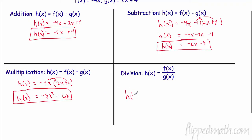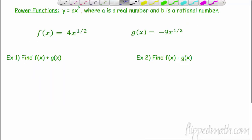And last but not least, let's look at division. So when I divide, I have my f of x again, which is negative 4x, divided by my 2x plus 4. And really, we're done right there.